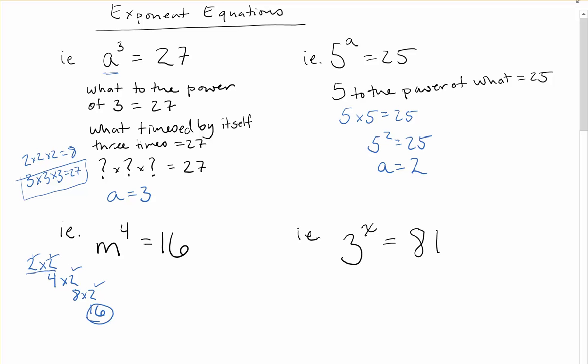Writing it out step by step — 2 × 2, answer below; × 2, answer below; × 2, answer below — helps you count correctly. It's common for students to miscount and not count that first 2. Make sure you count all of them. So the answer here is m = 2. But this one gets slightly more complex.